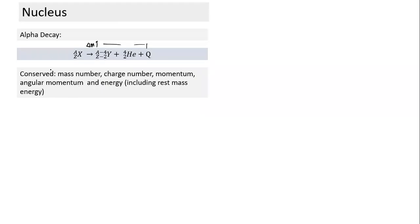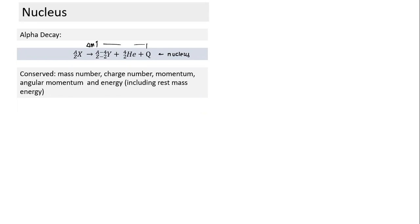In alpha decay, the common conservation laws apply: mass number is conserved, charge number is conserved, momentum is conserved, angular momentum is conserved, and energy is also conserved — including rest mass energy converted into kinetic energy. We are focusing on the nucleus here. When we take rest mass energy, mass is also taken in the form of energy, and by conservation of energy we get the Q term.